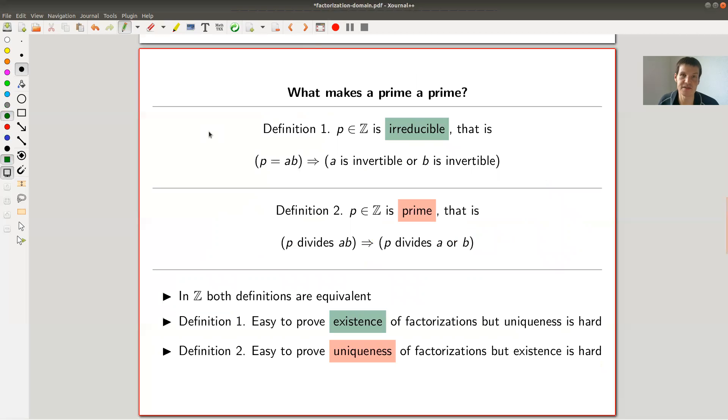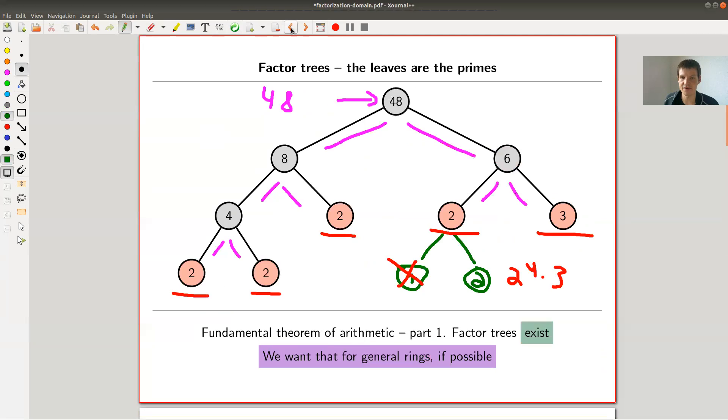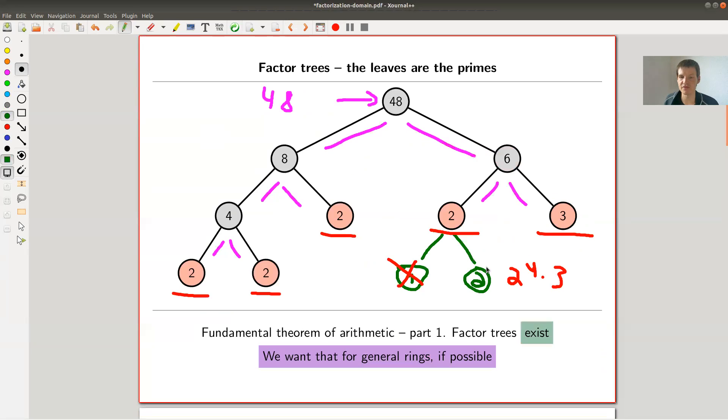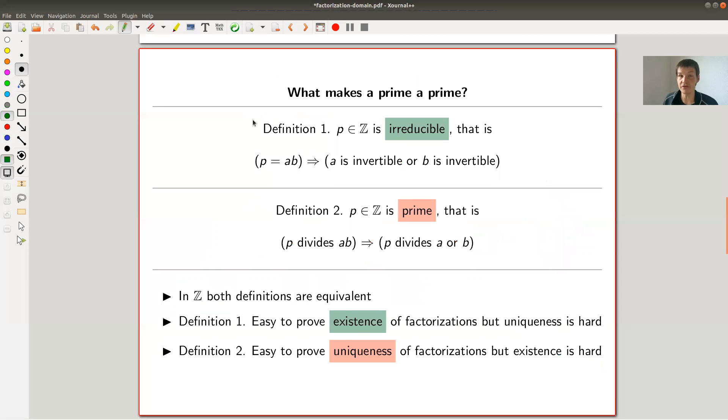And then kind of the question is, let's generalize it to arbitrary rings. So what can we do? What are actually the two properties which give us those factor trees, those two statements that they exist? And that they're unique. It turns out it's not the same. And that's maybe the only confusing point is that the definition of a prime number or a prime element for a general ring will be slightly different from what you are usually used to.